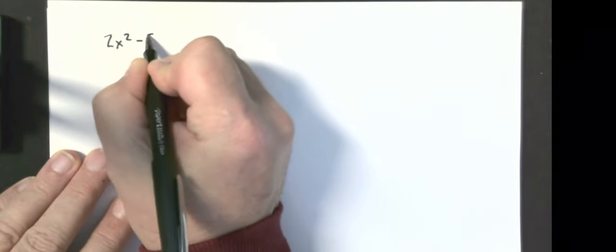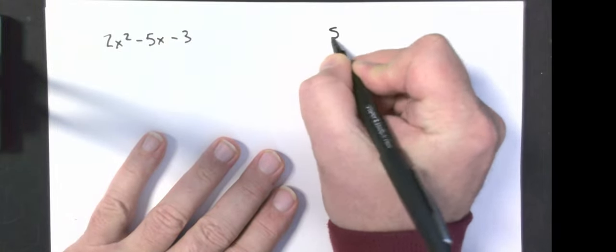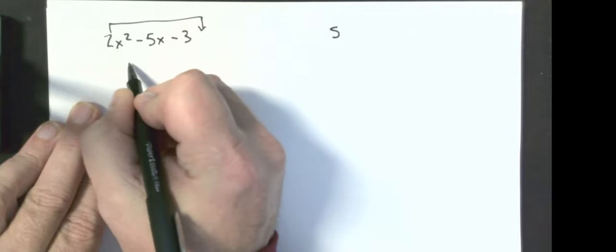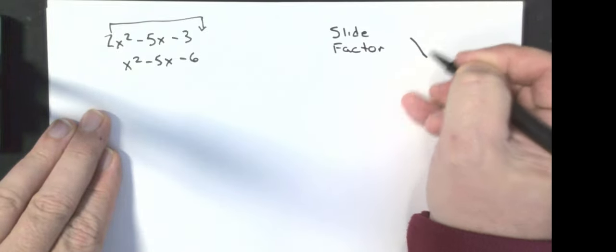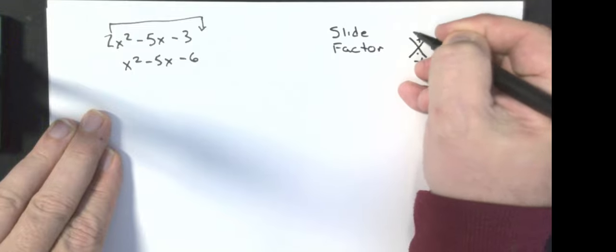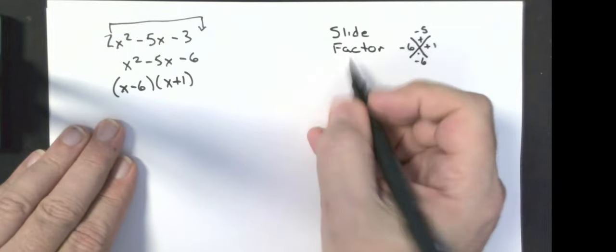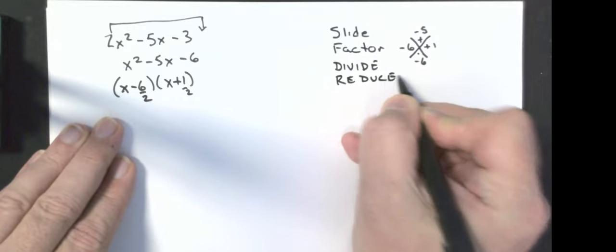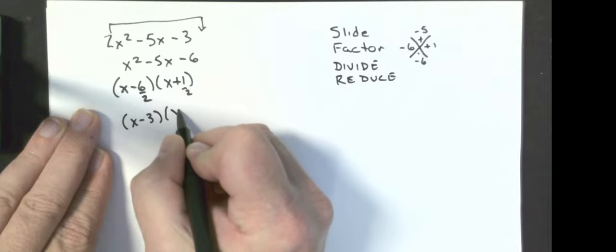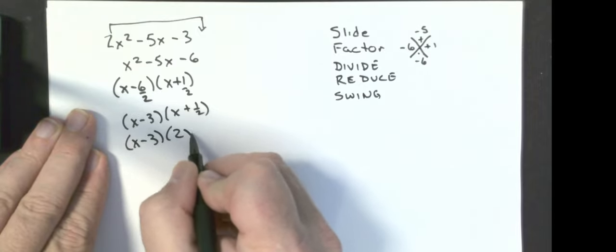Next example: 2x squared minus 5x minus 3. S — slide the 2 over to get x squared minus 5x minus 6. F — factor: two numbers that multiply to negative 6 and add to negative 5, which are negative 6 and positive 1. D — divide by the 2, giving (x minus 6/2)(x plus 1/2). R — reduce. S — swing. And we're done.